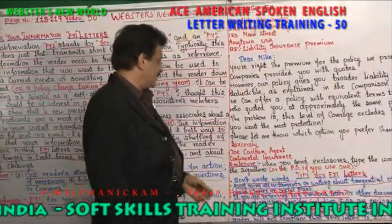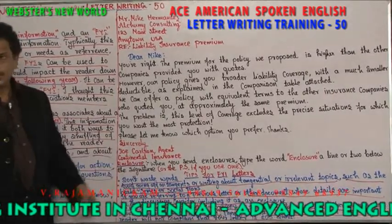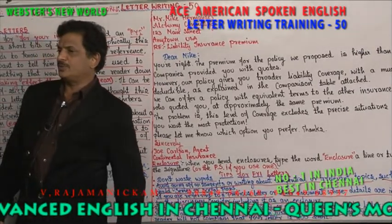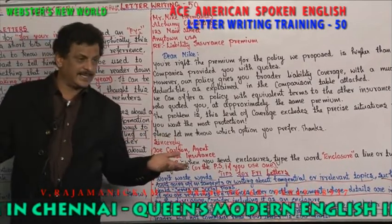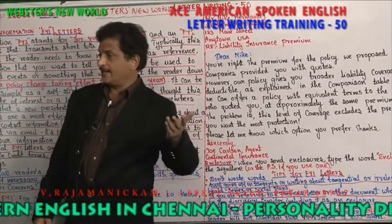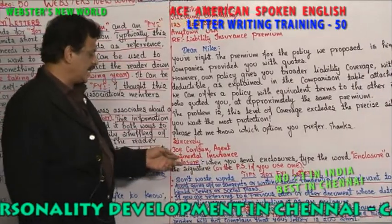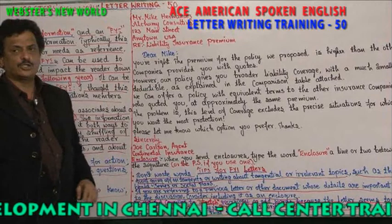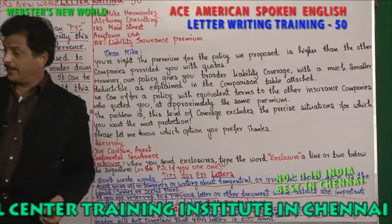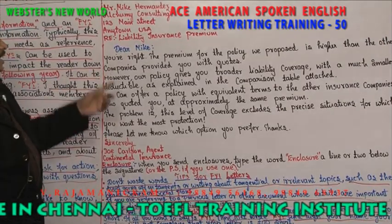Here is a letter to Mr. Mike by Joe Carlson, an agent at Continental Insurance. An insurance agent is writing a letter to Mr. Mike. There are hundreds of insurance companies in India — general insurance, life insurance, government and private insurance — each with their own policy. This gentleman, Joe Carlson, working in Continental Insurance, is writing to Mike stating that he will have to pay more premium — more amount of money compared to other companies.